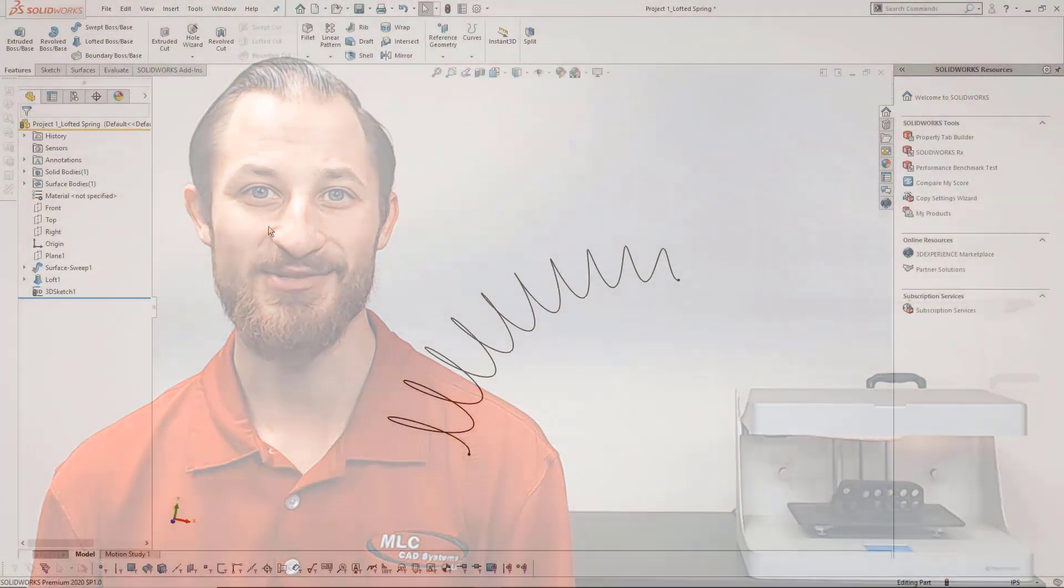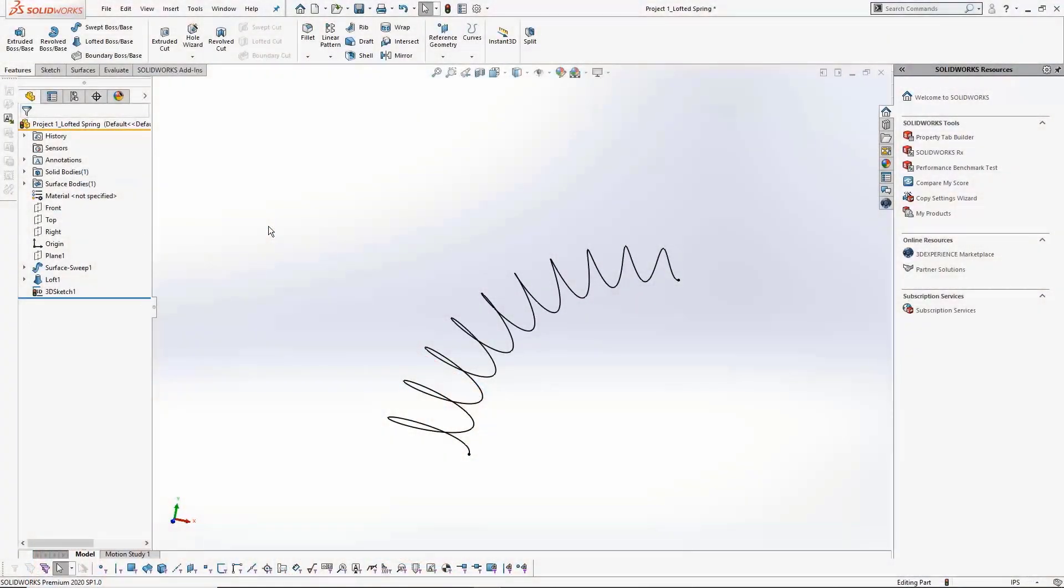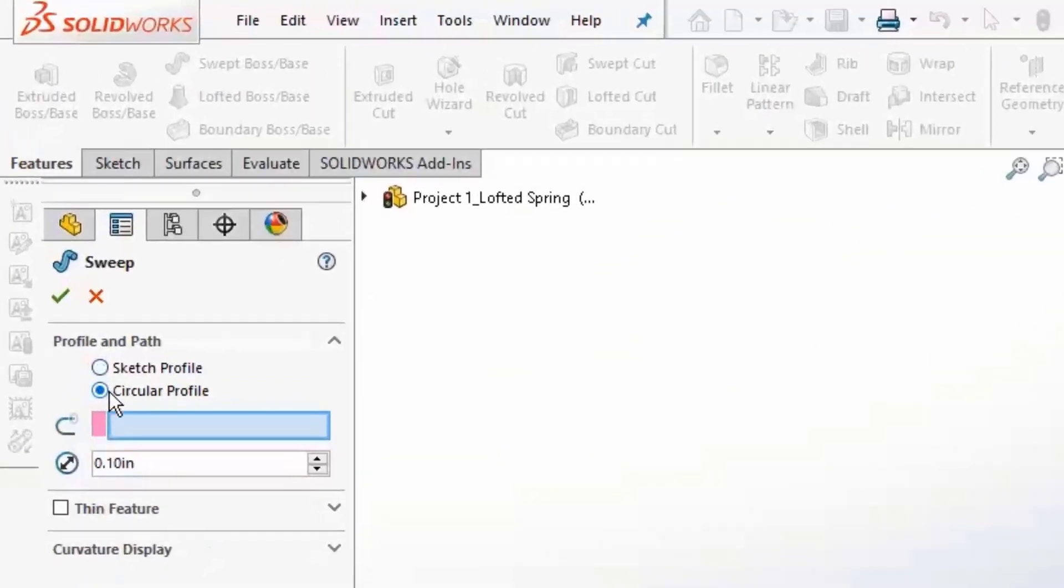Now, all we need to do to take it home is a simple sweep extrude. In fact, since the spring is circular, we'll only need one sketch and not the standard two sketches generally needed for sweeps. This is because the sweep extrude command has a built-in circular profile to make your life easier. Simply click circular profile and enter the desired diameter.